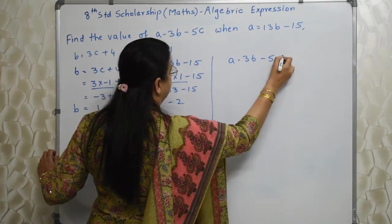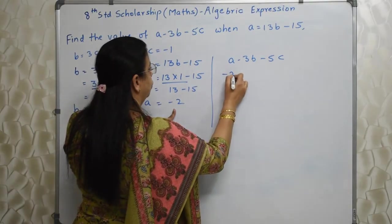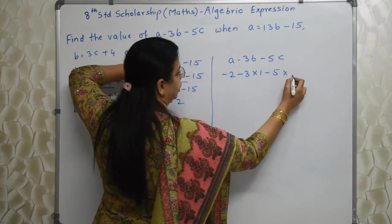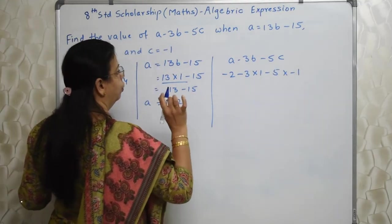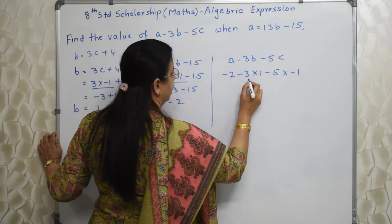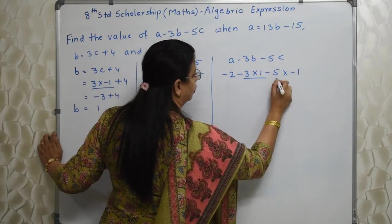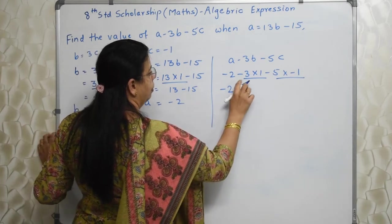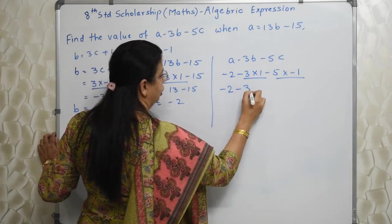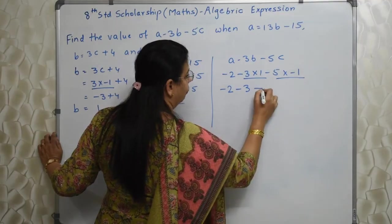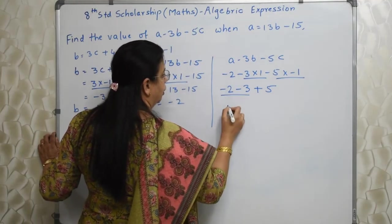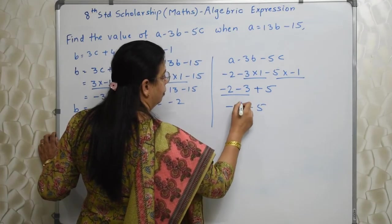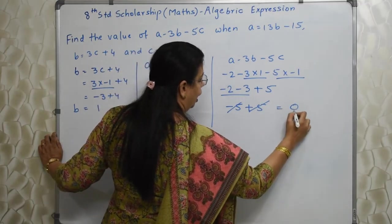So a minus 3b minus 5c. a is minus 2 minus 3 into 1, b is 1, minus 5 into minus 1. Here again I am telling you only thing is you have to be very careful with the signs. Must apply BODMAS, this first then this. So minus 3 into 1, this minus 2 will remain like that. Minus 3 into 1 is minus 3 and then minus 5 into minus 1 will be plus 5. Now here minus 2 minus 3 will be minus 5, this plus 5 as it is, obviously minus 5 plus 5 will go with each other, answer is 0.